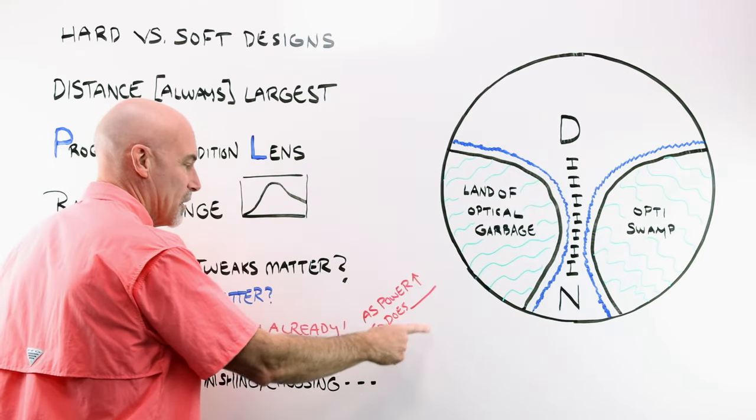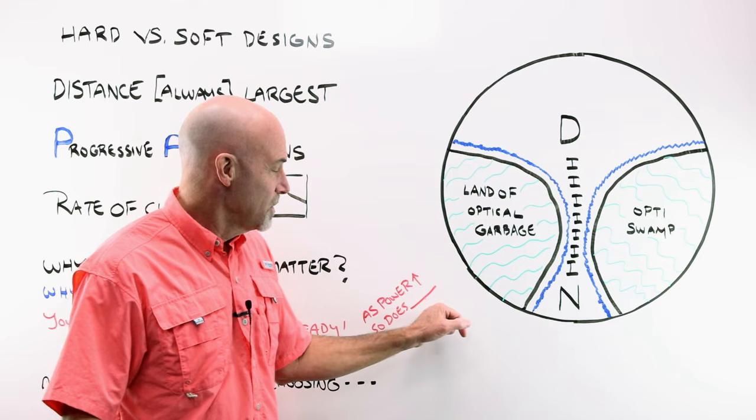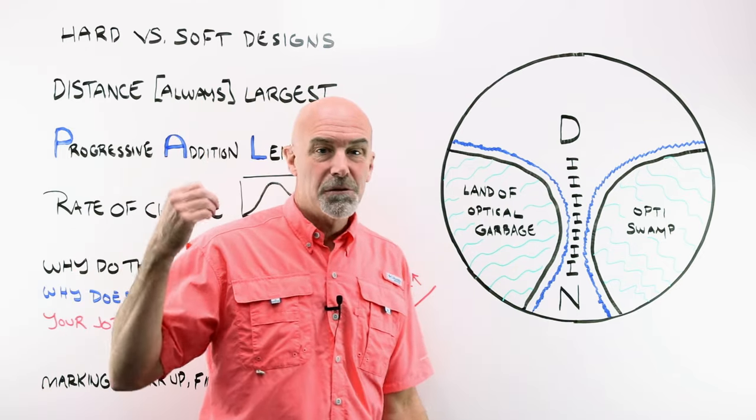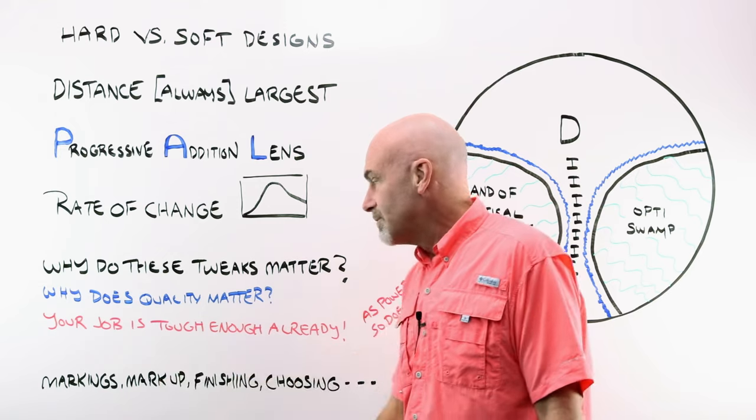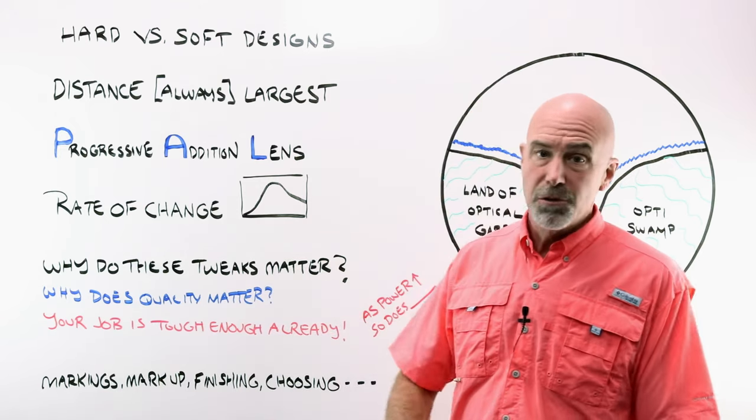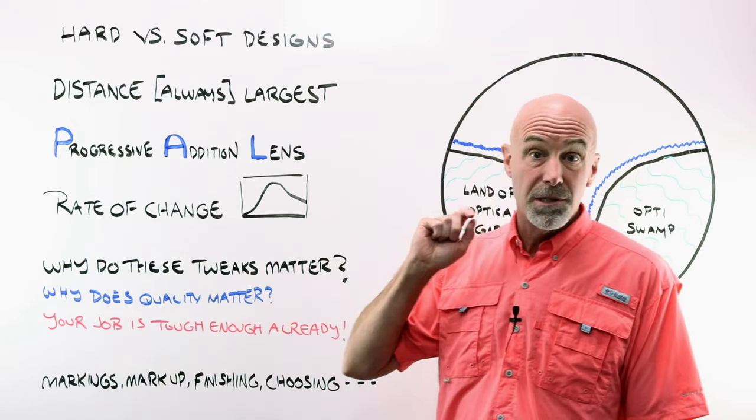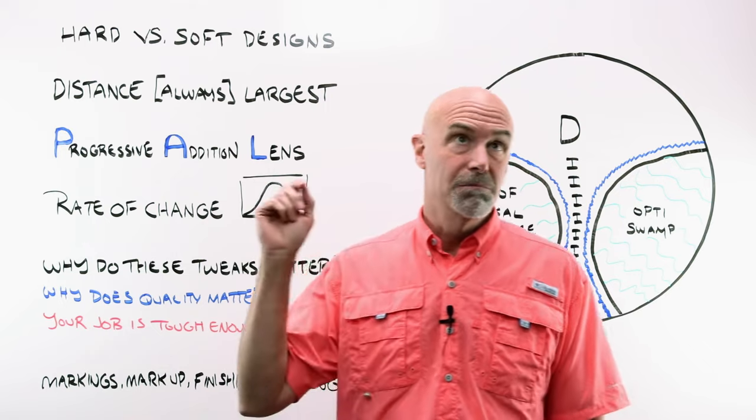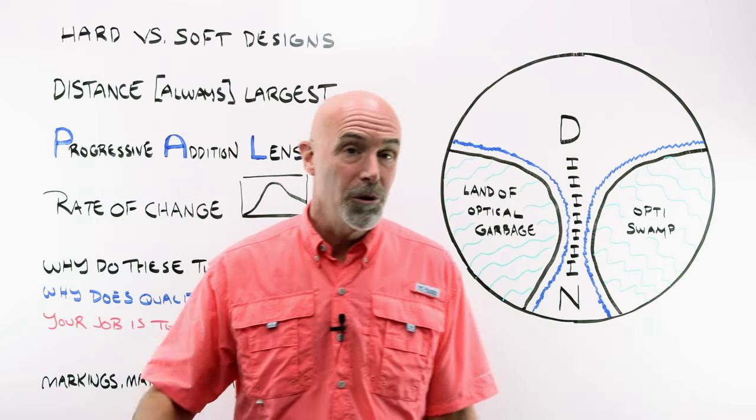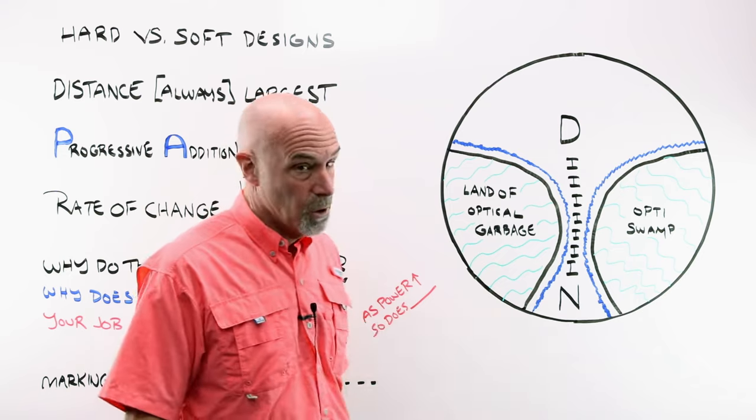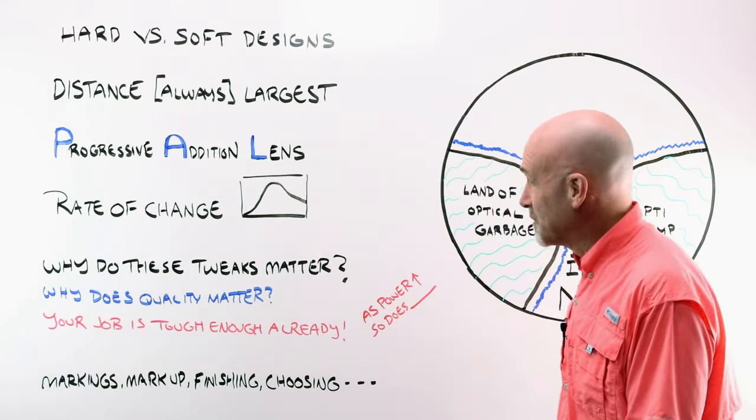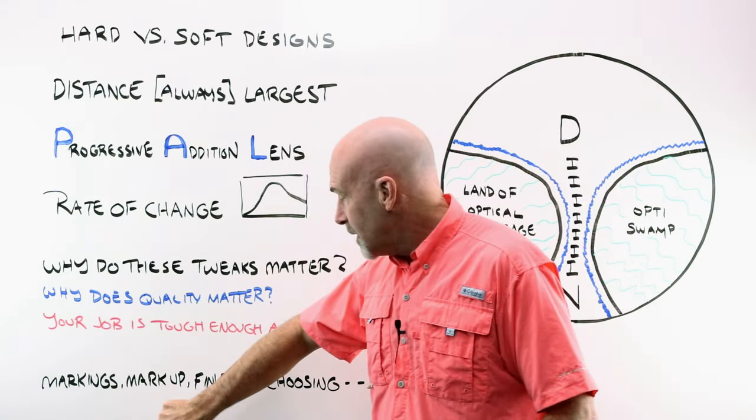Because as power goes up, say it with me, so does distortion throughout the lens. So your job is tough enough already. It's these little tiny tweaks. It's the quality that matters. It's the lens design that matters. It means choosing the best lens for your individual customer. It's going to keep them happy as you work with them through the years.